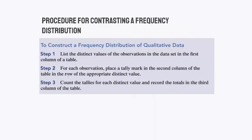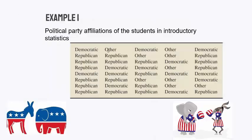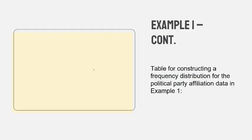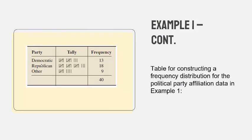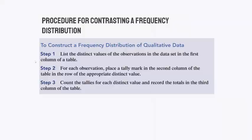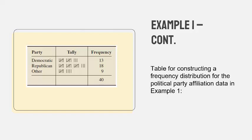There are three steps to constructing a frequency distribution. Step one: list the distinct values of the data set in the first column of a table — so we list Democrat, Republican, and Other. Step two: for each observation, place a tally mark in the second column in the row of the appropriate distinct value. Step three: count the tallies for each distinct value and record the totals in the third column.